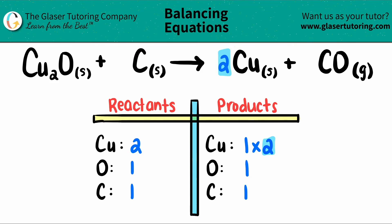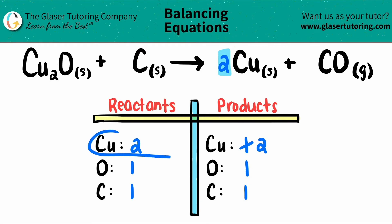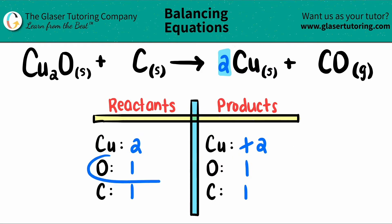I'm going to put a two here. It just makes sense — you just kind of double check yourself. This is clearly saying that I have two copper. So I cross off my one — it's a two. And everything is balanced. I have two coppers on both sides. I have one oxygen, and I have one carbon.